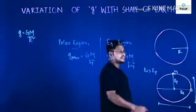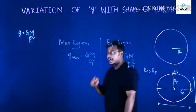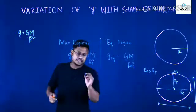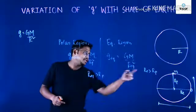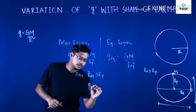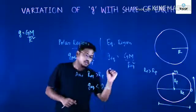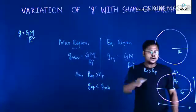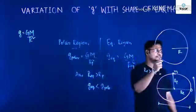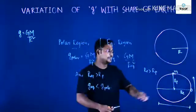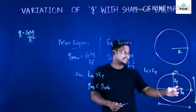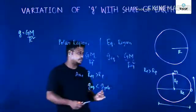As we discussed, the radius of the earth at the equatorial plane is greater than the radius at the polar region. So R_equatorial is greater than R_polar, and therefore g_equator is smaller than g_pole. So g_pole is the maximum acceleration due to gravity on a body due to the shape of the earth, and g_equatorial is the minimum.